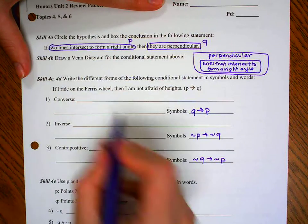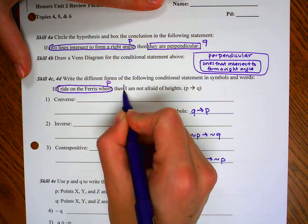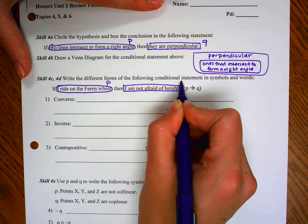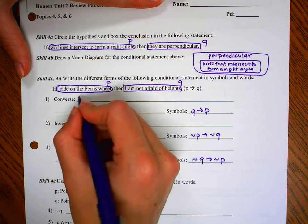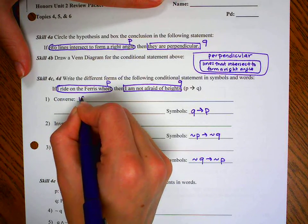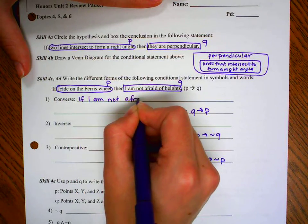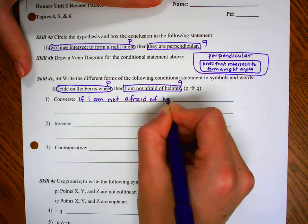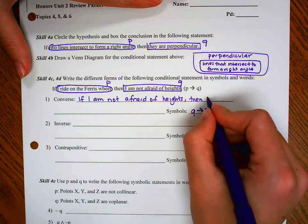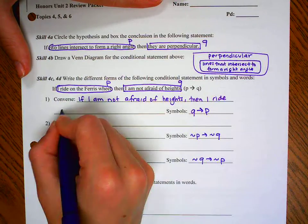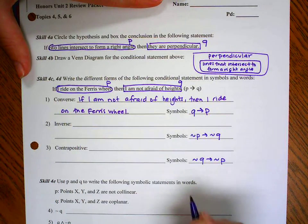Now that we've done that, let's figure out what Q and P are. P is after the if, before the then. Q is after the if and until the end. They've given you that hint right there. So my converse is if Q, I am not afraid of heights, then P, I ride on the Ferris wheel.